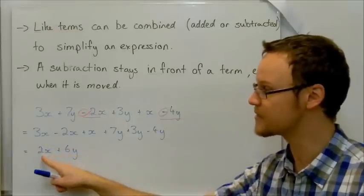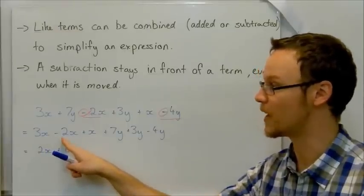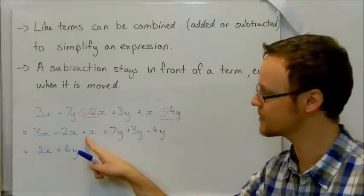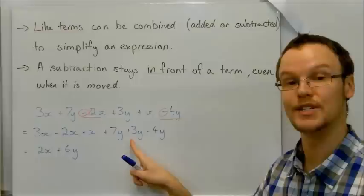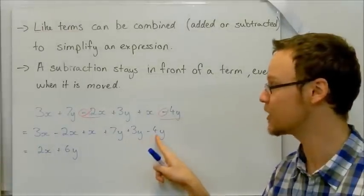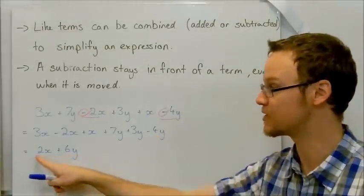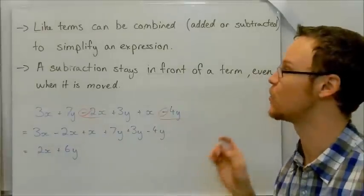So 3x minus 2x plus x, that's equal to 2x. 3x minus 2x is just 1x. x plus x is 2x. Here we've got 7y plus 3y, which is 10y. 10y take away 4y is going to be 6y. So we're left with 2x plus 6y.